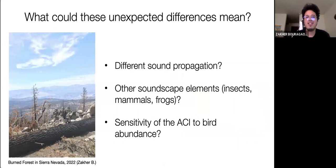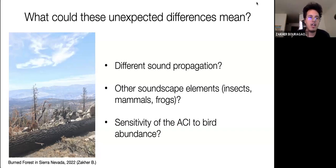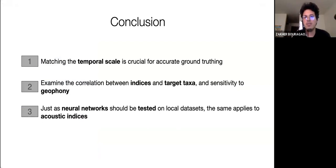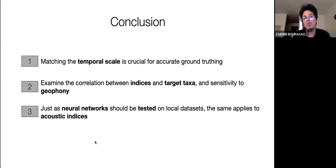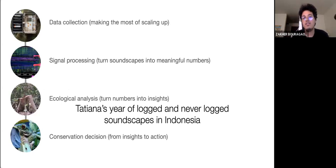I just got these results and there are a lot of questions to solve. Could these unexpected differences be related to how sounds propagate in the ecosystem? Could they be related to other soundscape elements such as insects, mammals, or frogs? Could they be related to the sensitivity of the ACI to abundance? No matter the reasons, it is important to consider matching the temporal scale for both metrics to provide accurate ground-truthing. It is also important to examine the correlation between indices and target taxa, as well as their susceptibility to geophony. Just as neural networks should be tested on local datasets, the same applies to acoustic indices.